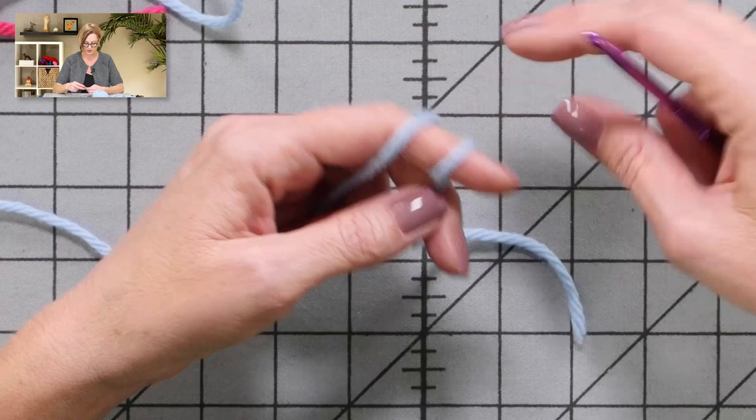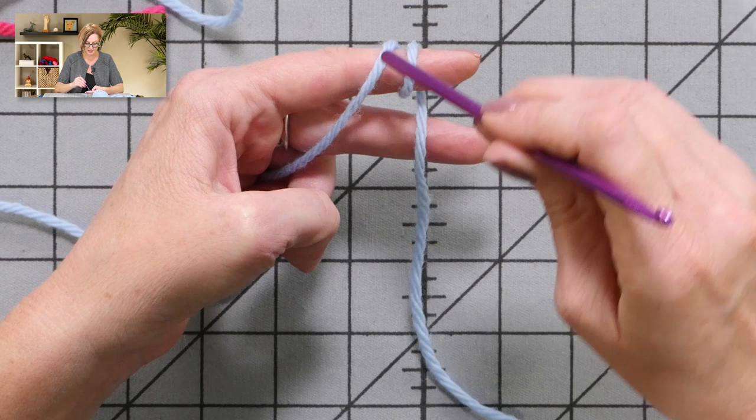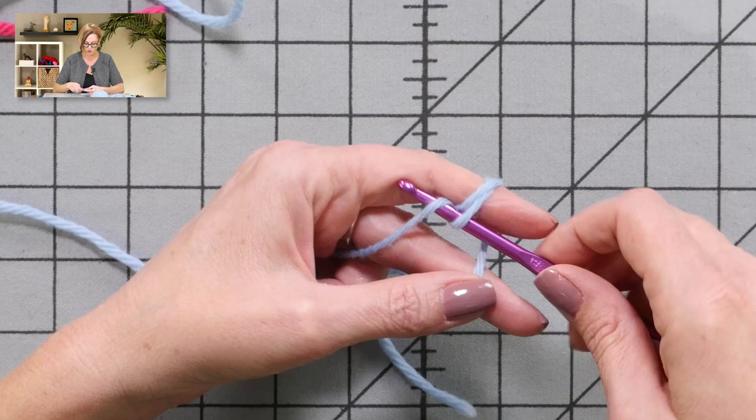I'm going to demonstrate for a right-handed person. Everything is just backwards for a left-handed person. So the working yarn is here, the tail end is here. Put the crochet hook under the loop on your finger, grab the yarn, pull up a loop, grab the yarn and pull it through. That's one stitch.